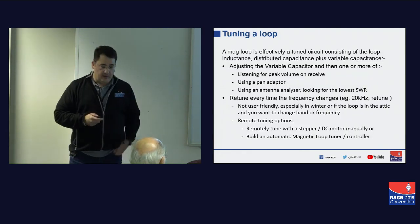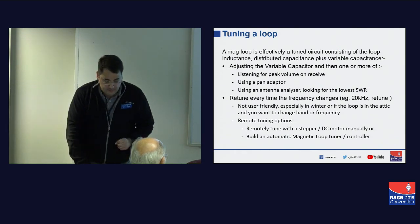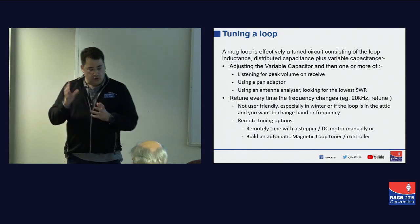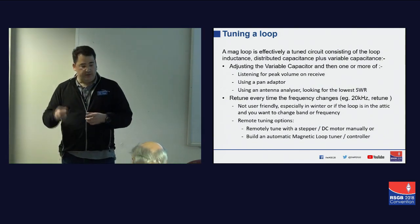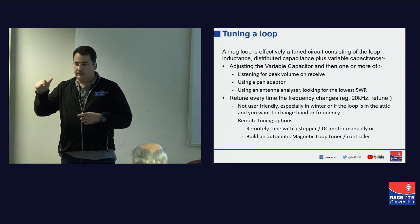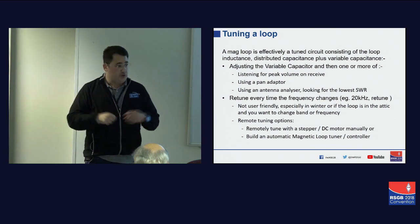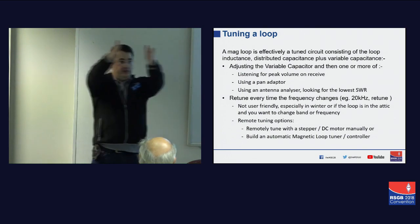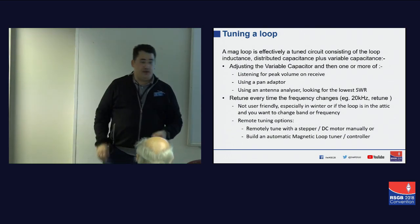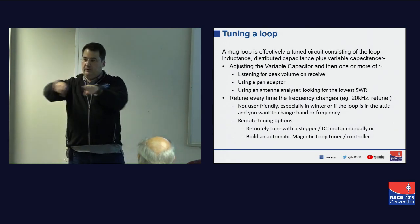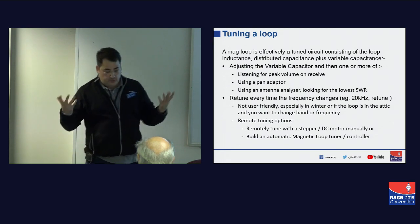What I want to do is talk about tuning a loop. How do you know the loop is tuned and how do you tune it? One way is to get the radio out, turn the capacitor, and listen for maximum received noise — that can take a while if you're going in the wrong direction. Another option is to use a pan adapter where you can see where the signal is because it's high-Q, and move backwards and forwards. You can also get an antenna analyzer with a graphical display and see where resonance is. We use a combination of all of that.